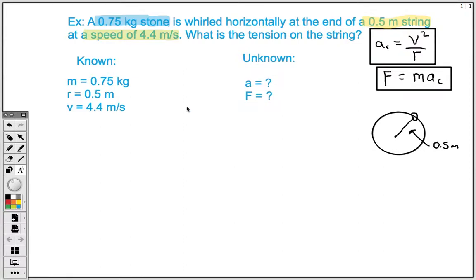And in setting up this particular problem, for us to be able to find the tension, in other words, the force on that string, we're going to need to solve for the centripetal acceleration first. So the first equation that we're going to be working on is this equation up here. And the nice thing is, if we look at our known values, we know what our velocity is, and we know what our radius is. So let's go ahead and start plugging those things in.